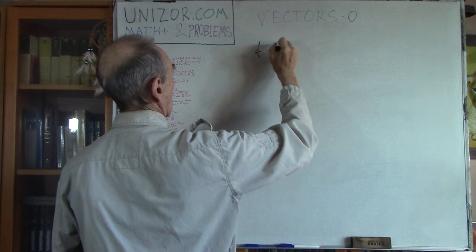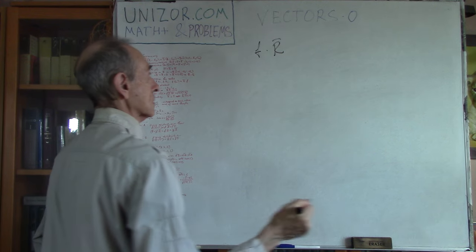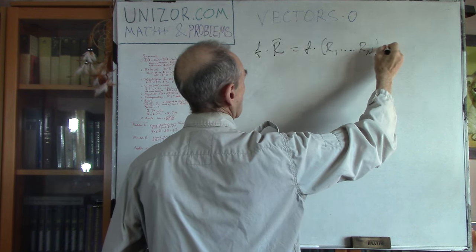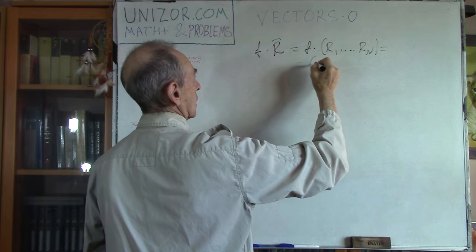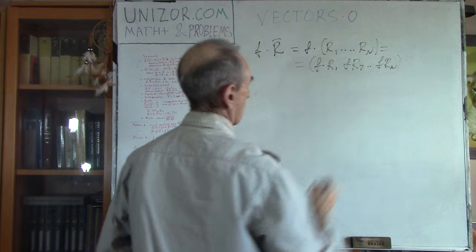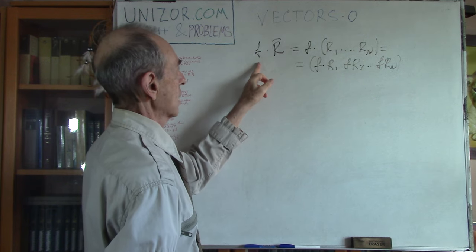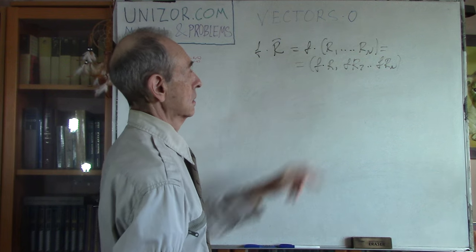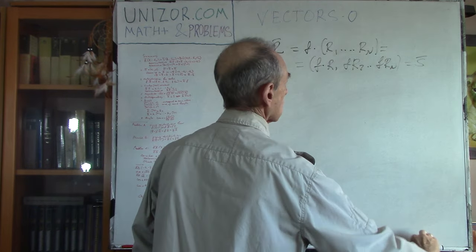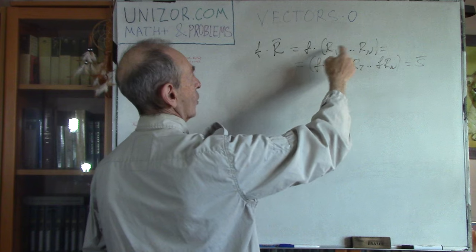Another operation is multiplication of vectors by a scalar. That's basically multiplication of vector (r1, ..., rn) by scalar f, which by definition gives (f·r1, f·r2, ..., f·rn). So this is the definition of multiplication by scalar — if you multiply a vector by a scalar, you get another vector formed by multiplying each component by that same real number f.